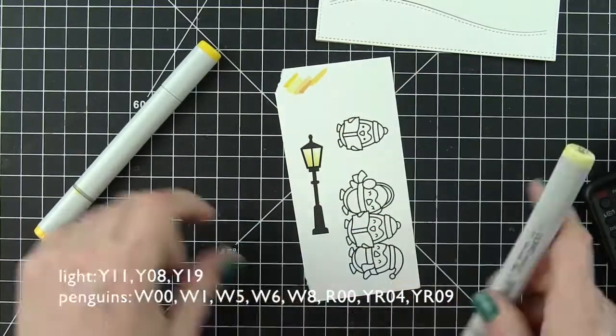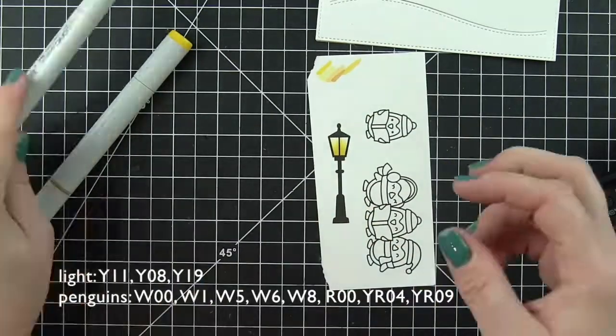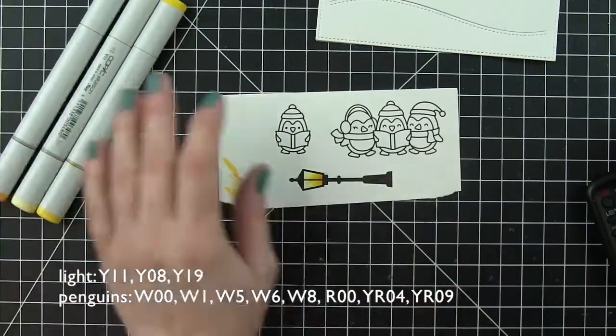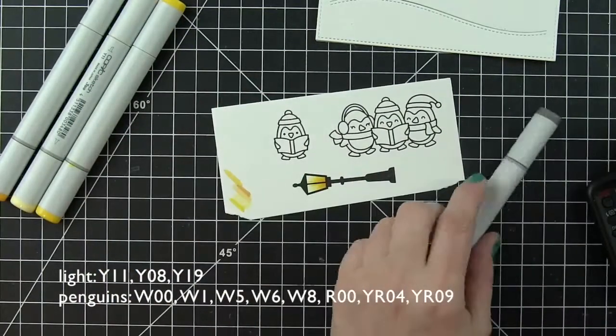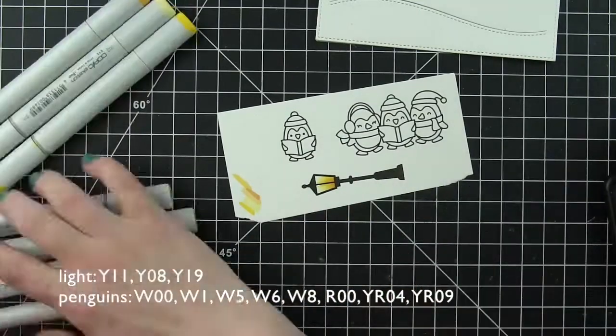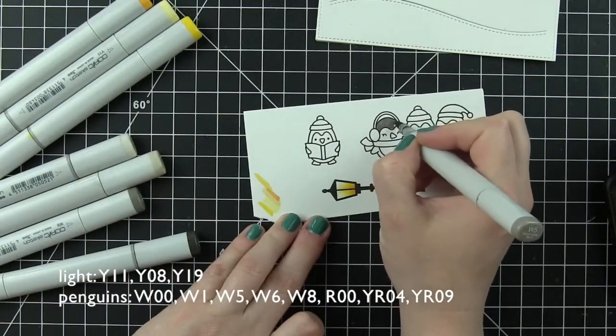I'm also going to be using some elements from the portrait stitched hillside backdrop and show you how well they work together. To save time, I went ahead and stamped my images off camera. I've got the trio of penguins, another penguin from Here We Go A Waddling, and the light post.